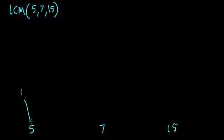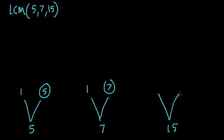So 5 can be split into 1 by 5 because it's already prime. And circle the prime value there. Remember, 1's not prime. 7 can be split into 1 times 7. 15 can be split into 3 times 5, and those are both prime.